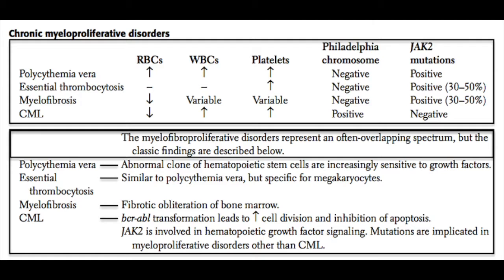First, we have polycythemia vera. This is an abnormal clone of hematopoietic stem cells in the bone marrow that are trying to produce red blood cells. These erythropoietic stem cells are uncontrollably releasing red blood cells into the circulation, so a large increase in red blood cells results in a very large hemoglobin or hematocrit value — that's usually how this disorder first gets picked up on routine laboratory testing.